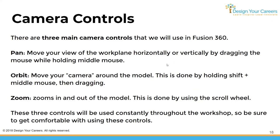Now let's cover camera controls for navigating in Fusion 360. The pan tool moves the view horizontally or vertically by holding middle mouse and dragging. Orbit moves your camera around the model by holding Shift plus middle mouse and dragging — your object stays stationary while you orbit around it. Zoom simply zooms in and out using the scroll wheel.